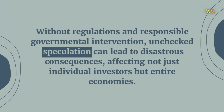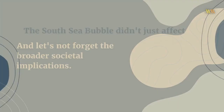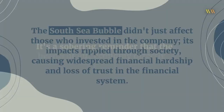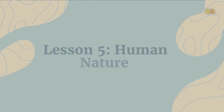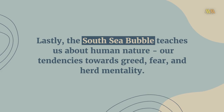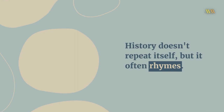Lesson 4 — Impact on Society: The South Sea Bubble didn't just affect those who invested in the company; its impacts rippled through society, causing widespread financial hardship and loss of trust in the financial system. It's a sobering reminder that the health of our economy directly influences our societal well-being. Lesson 5 — Human Nature: Lastly, the South Sea Bubble teaches us about human nature — our tendencies towards greed, fear, and herd mentality. These are factors we must always be mindful of when engaging with financial markets. History doesn't repeat itself, but it often rhymes. So let's use these lessons from the past to guide us toward a more informed, responsible, and sustainable economic future.